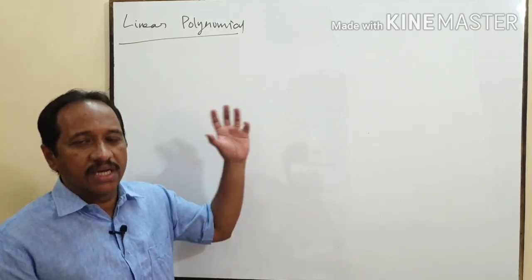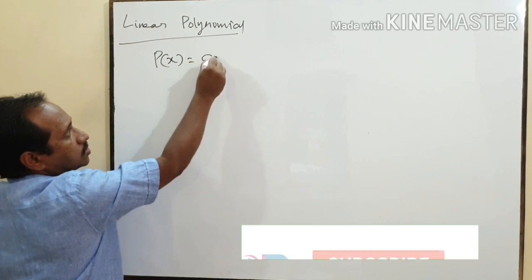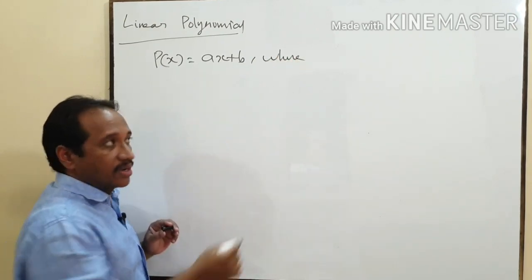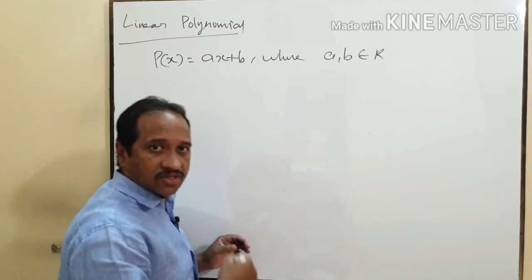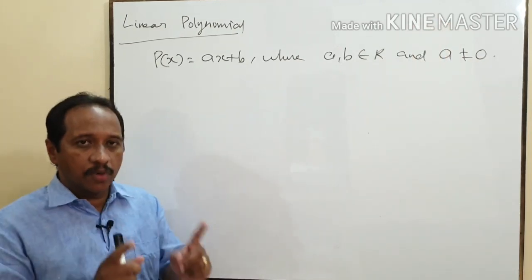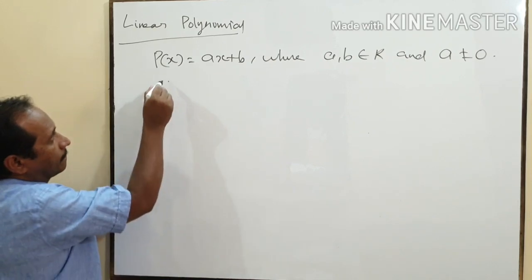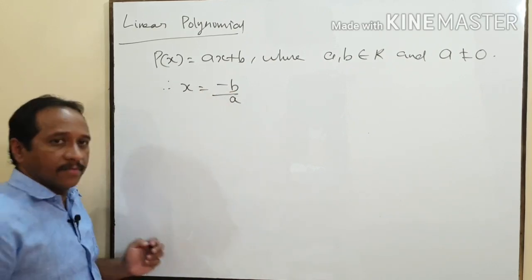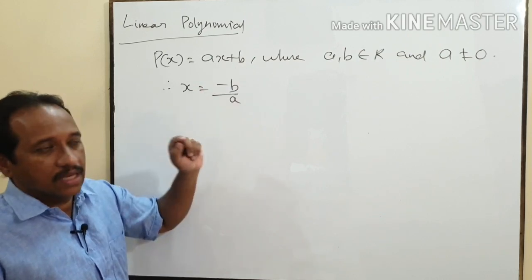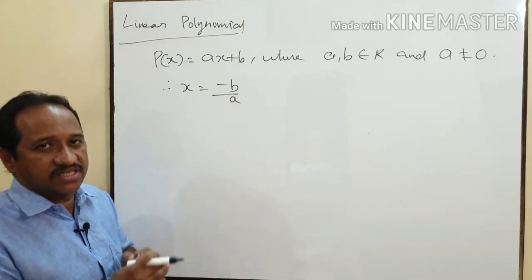First of all we are going to learn the relationship between the coefficients and zeros of a linear polynomial. You know that the standard form of a linear polynomial is p(x) = ax + b, where a and b are real numbers and a is not equal to zero. A linear polynomial can have at most one zero, and the zero is given directly by the formula x = -b/a, where b is the constant and a is the coefficient of x. This is the only relation between the zero and the coefficients of a linear polynomial.